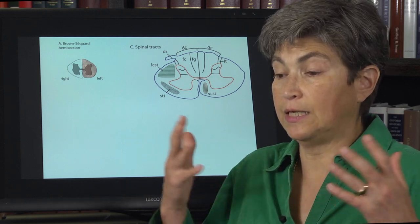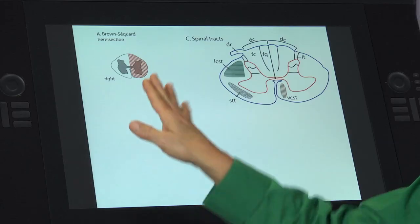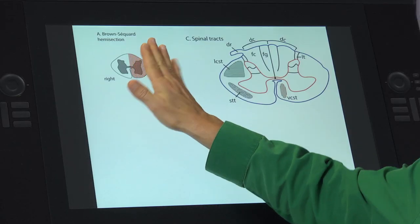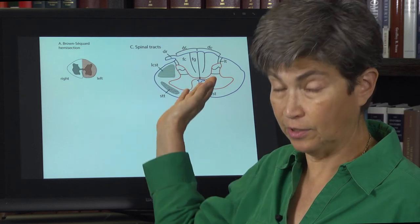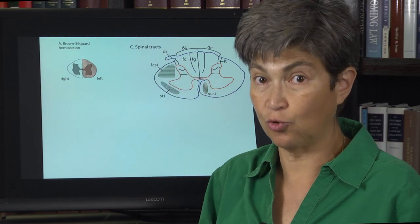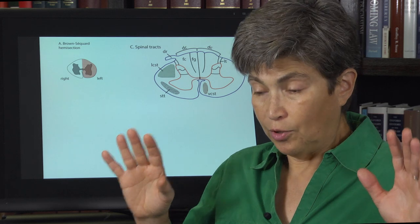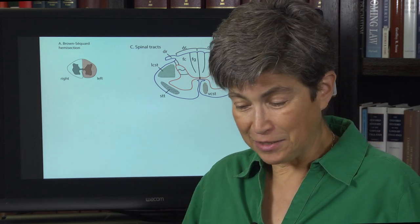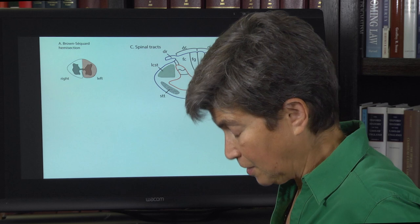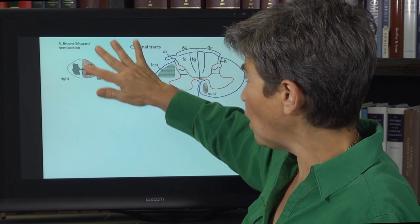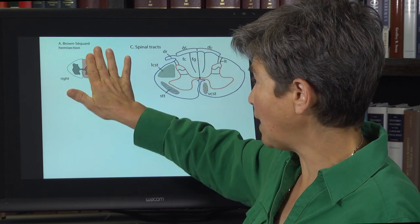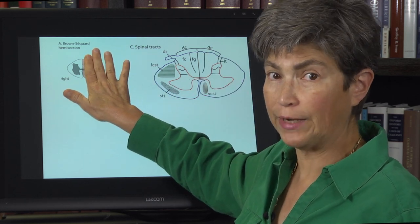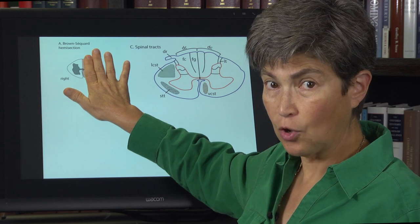The Brown-Séquard is an idealized lesion. It is a hemisection where half — either the left or the right half of the spinal cord — is cut just perfectly. We don't have to think about whether this actually happens; it's an idealized lesion. So what would happen if you cut the spinal cord in half?